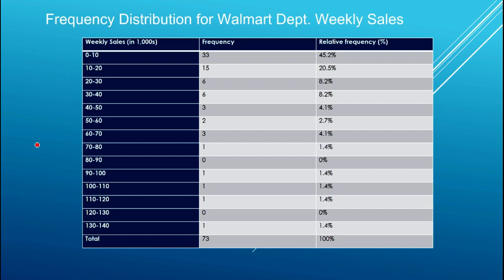Here's an example of a frequency distribution for Walmart data. I have used the weekly sales variable and calculated a frequency distribution for weekly sales, which is of course a quantitative variable. The difference from the previous video's frequency distribution is that there are no natural classes or categories for this quantitative variable — I had to determine the classes myself. That process is known as binning the data.